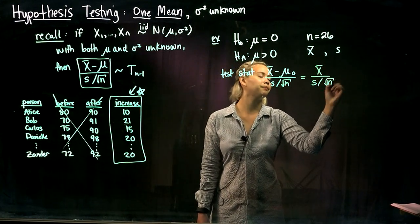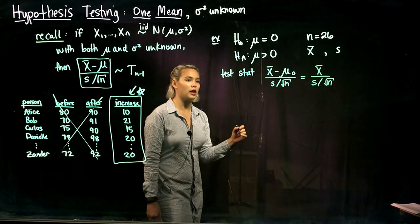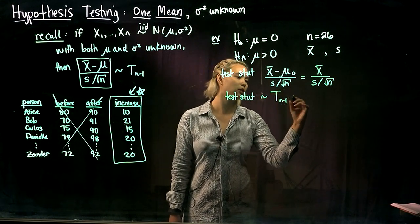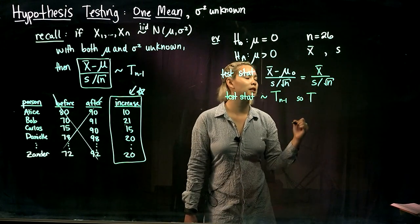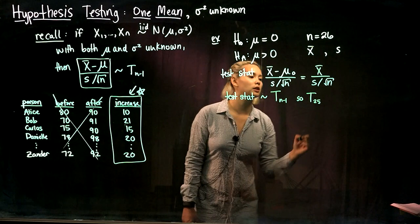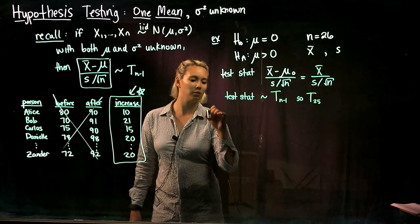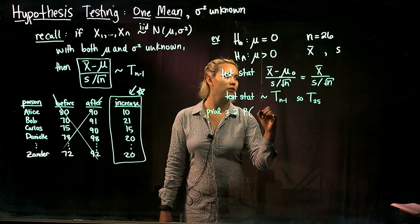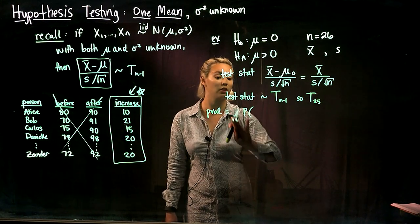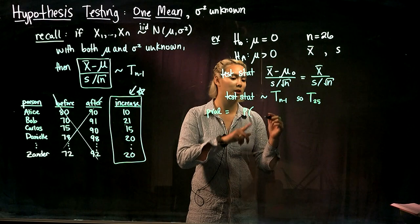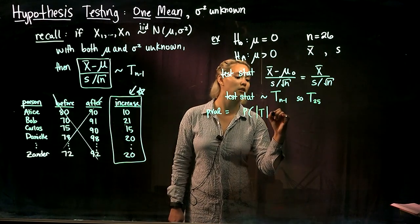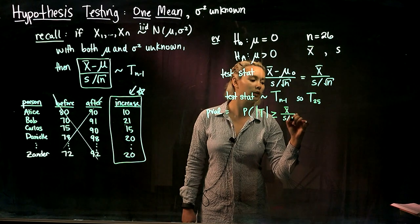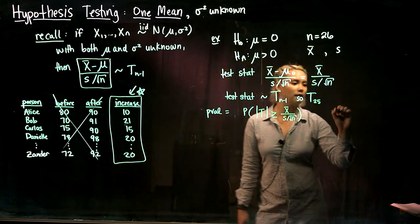So then our test statistic would be x̄ minus μ under the null divided by s over root n. But μ under the null is just zero, so this is x̄ over s divided by root n. So we could go ahead, plug in those values, and we know that our test stat follows a t distribution with n minus 1 degrees of freedom. So since we had 26 students here, we have 25 degrees of freedom.